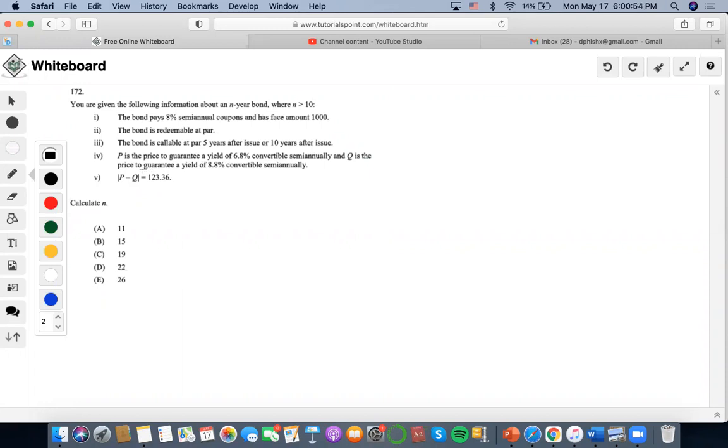which also means that we would have to redeem the bond at the earliest possible redemption date. So they gave us five years and 10 years maturity. This would be the earliest date because it's premium.